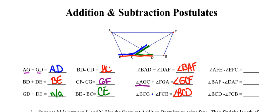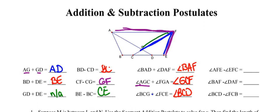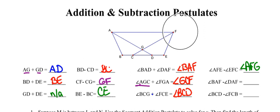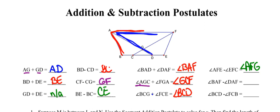Another name for that angle would be BCE. Now we're going to do the same thing with subtraction — starting with big angles and subtracting pieces away. If we start with angle AFE and take away EFC, removing the blue piece from the purple piece leaves angle AFG. Next, starting with angle BAF and subtracting angle DAF — taking away the blue piece — leaves angle BAD.